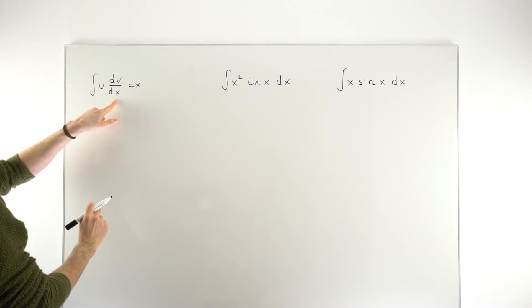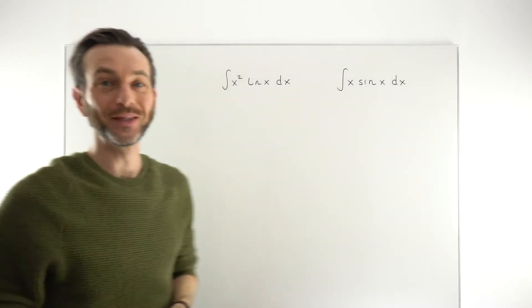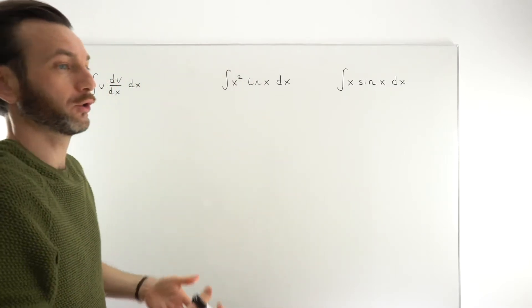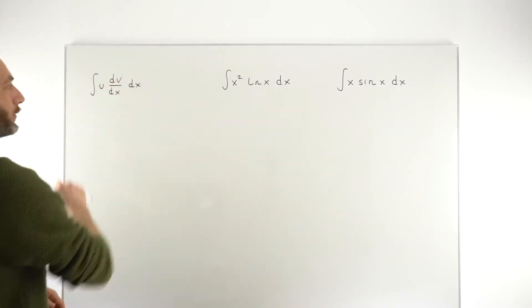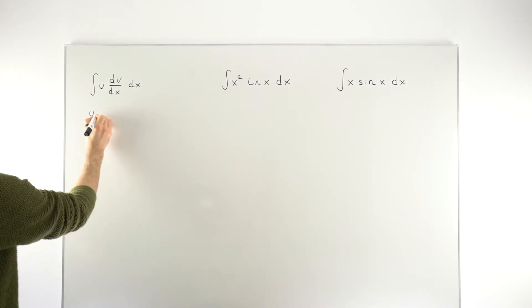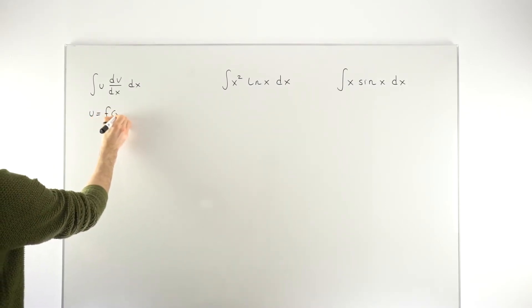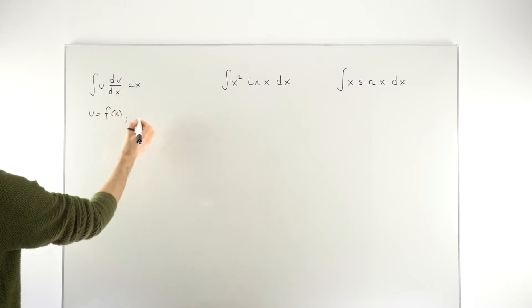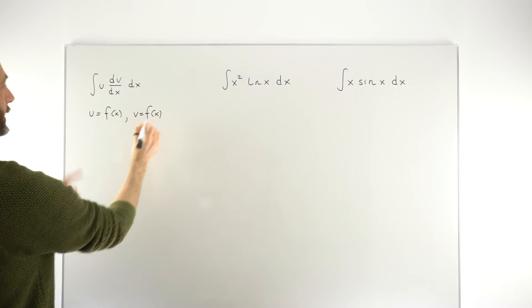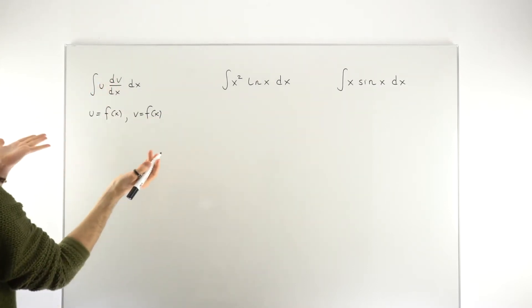So you've got a product here. You've got some function u times some other function. It just happens to be that that second function, in a confusing way, the v function is not actually just the v function, it's a derivative of some v function. So a couple of things about this. u itself is a function of x, and v is also a function of x, but this part here is not just v, it's the derivative of v.